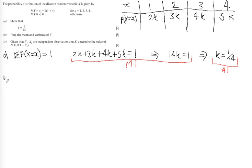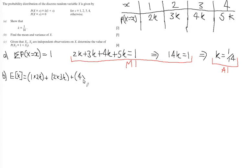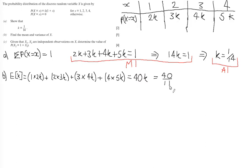For part (b), let's find the mean and variance of X. The expectation of X is the sum of x values multiplied by their probabilities. Working with k first: E(X) = 1×2k + 2×3k + 3×4k + 4×5k. This gives 2 + 6 + 12 + 20 = 40k, which equals 40/14, simplifying to 20/7. I would leave that as an exact answer.